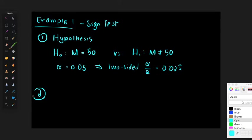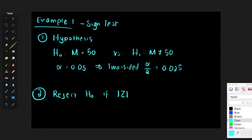Step two: rejection criterion. For a two-sided test, reject H0 if the absolute value of Z is greater than z alpha over 2, which equals 1.96.